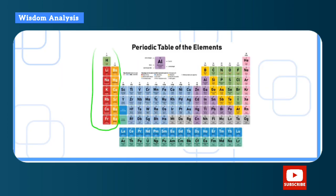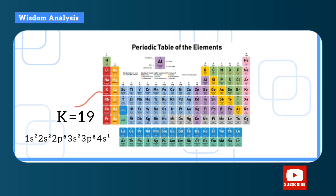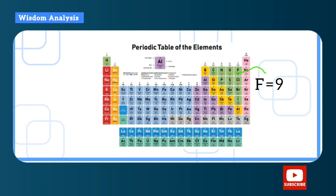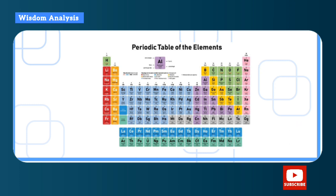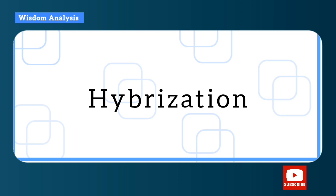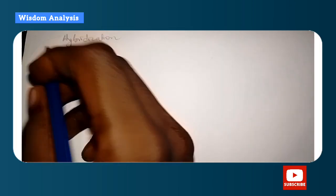This part of the periodic table is the s-block — the last electron fills the s orbital set (e.g., potassium). The p-block is where the last electron is in the p orbital set (e.g., fluorine). The middle transition elements form the d-block, and the inner transition elements form the f-block, following the same principle.